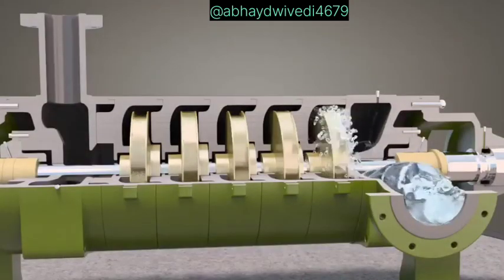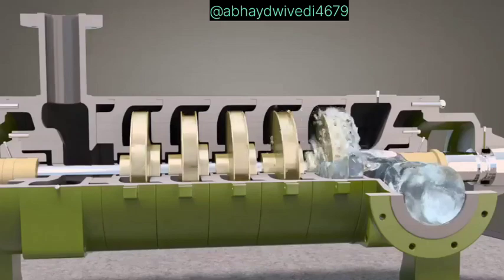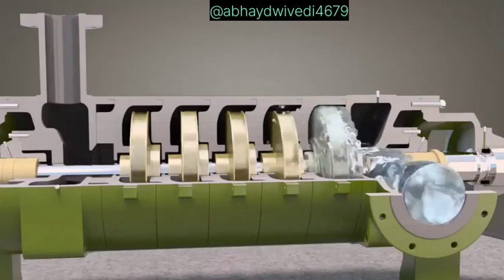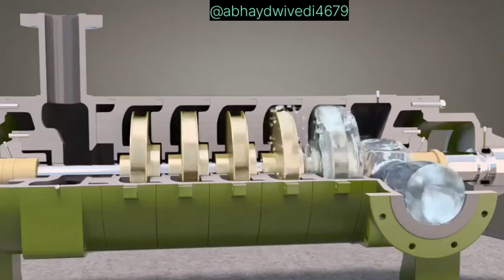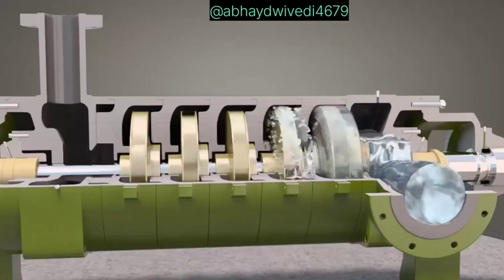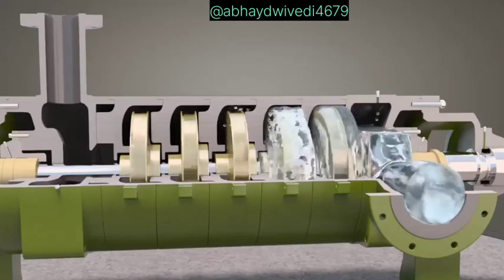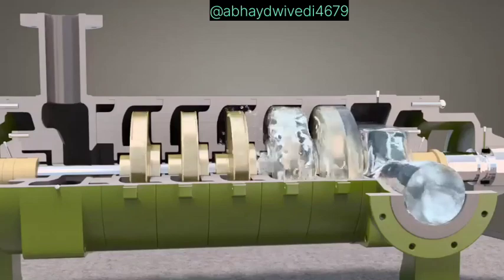Fluid enters the first chamber at suction line pressure and leaves the first impeller's outer edge at an elevated pressure. Upon leaving the first stage, the fluid enters the second stage where the pressure is increased further. Each succeeding stage increases the pressure of the fluid.